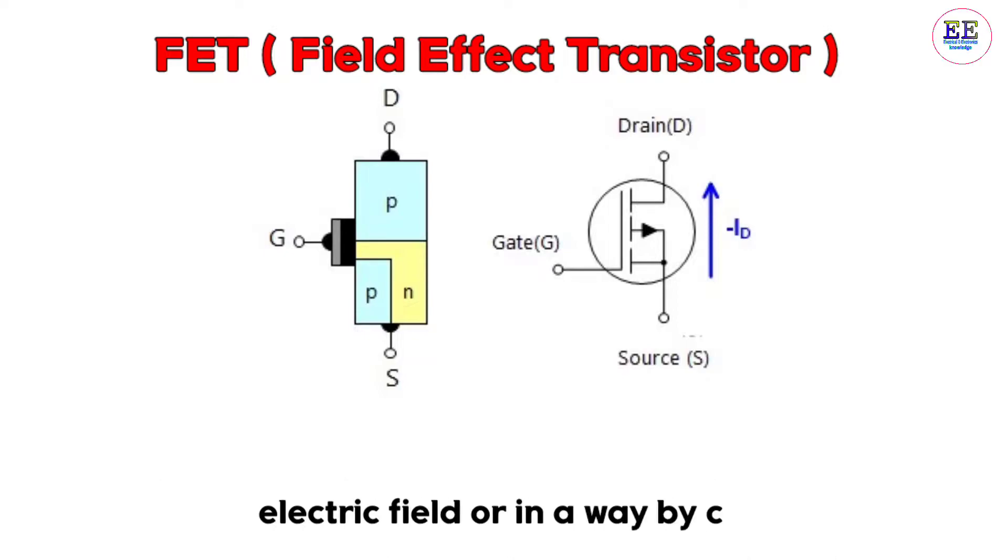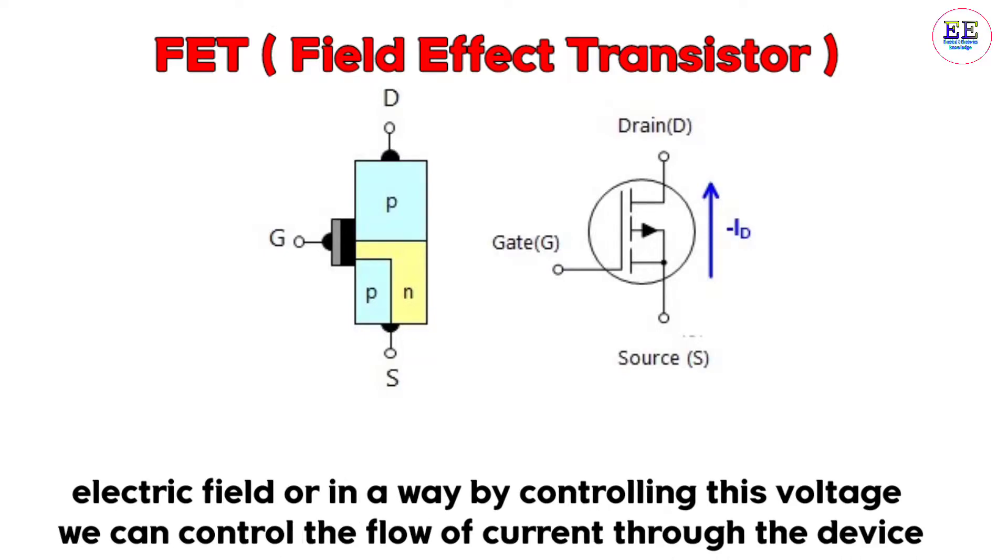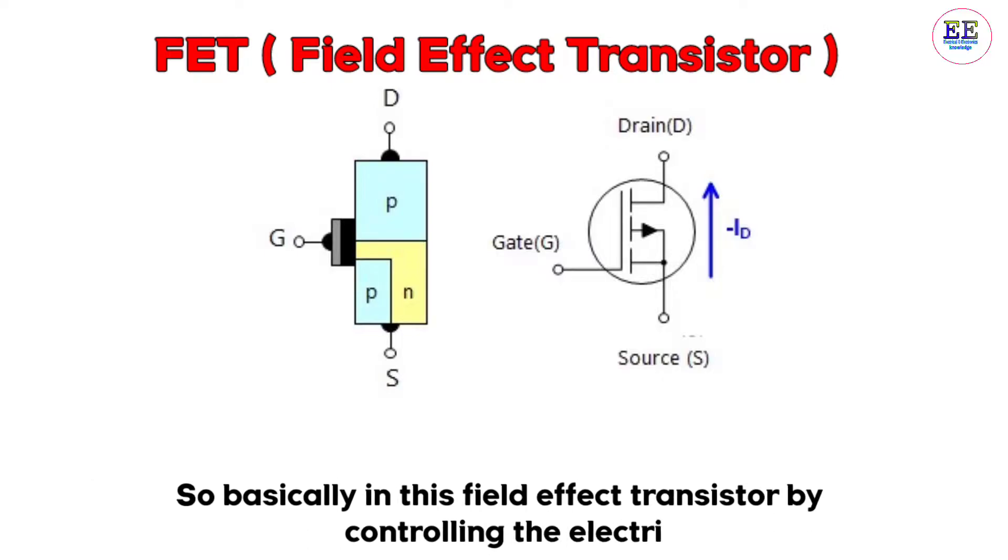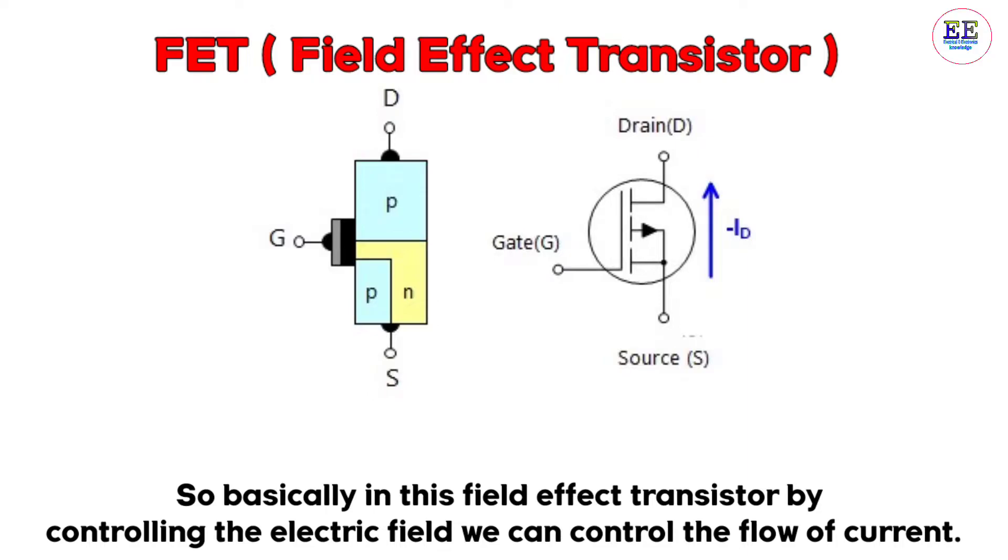This applied voltage generates an electric field within the device. By controlling this electric field or voltage, we can control the flow of current through the device. That's why it's known as the field effect transistor.